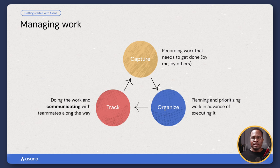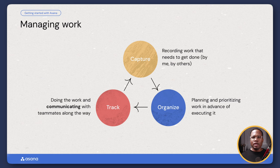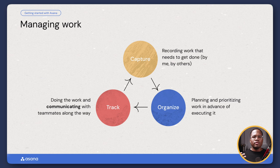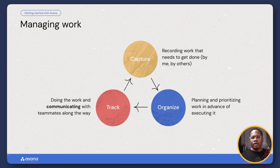The third thing Asana allows us to do is track that work — track the work being done, track all of the communications, track the status, track all the teammates working together in this one collaborative space. Think of this as a real cycle of project planning where we're capturing our work, putting it in one place, organizing that work, and then tracking it through various milestones, dashboards, and reporting.